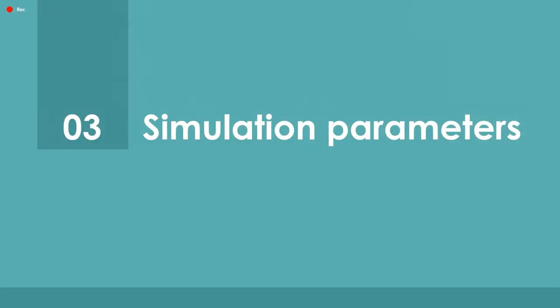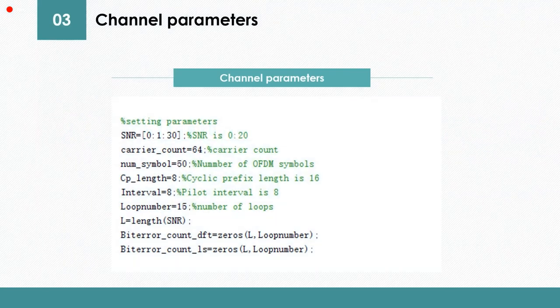Let's move to the third part, the simulation parameters. In this project, my main method is using the variable SNR to obtain the different results of the bit error rates from two channel estimation methods.